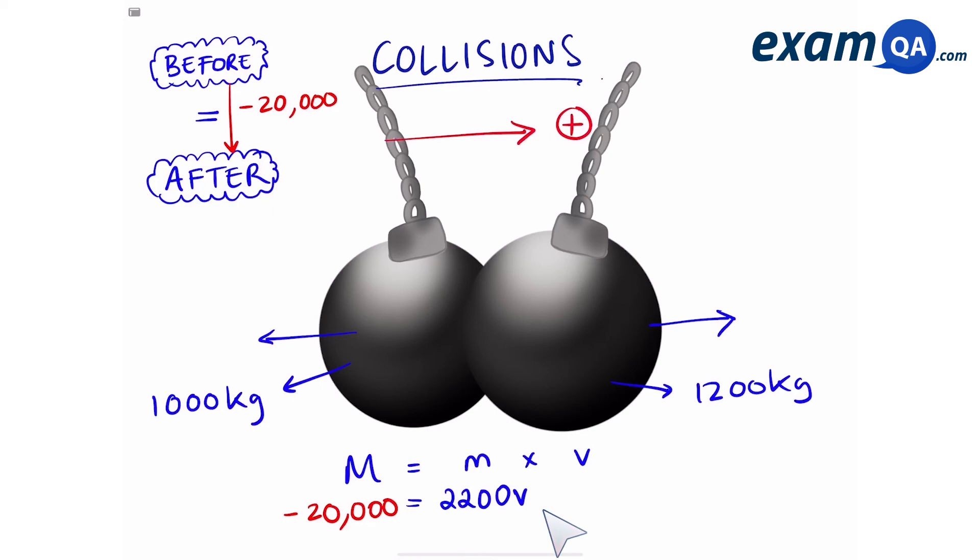All we have to do now is make V the subject of the formula, divide both sides by 2200, which gives us an answer of minus 9 meters per second to one significant figure. Since it's a negative answer, that means the balls will be moving towards the left by 9 meters per second.